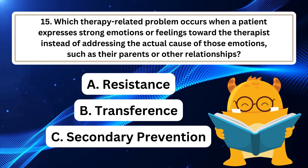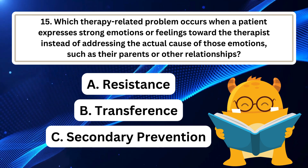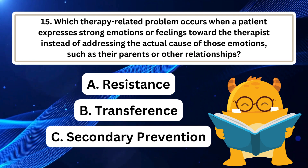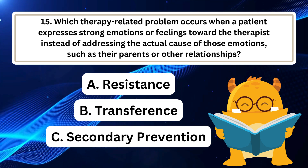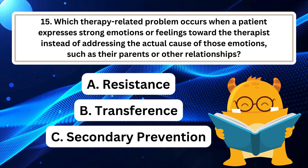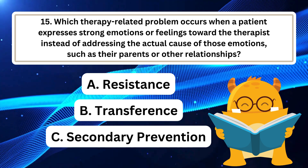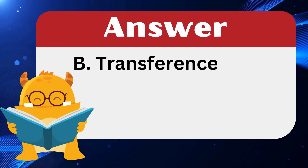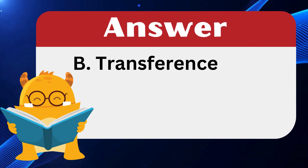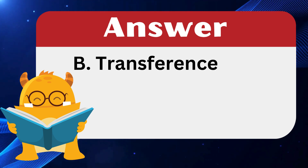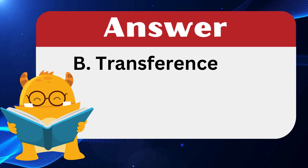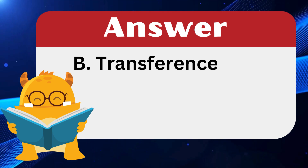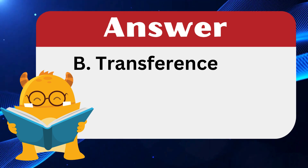Question 15: Which therapy-related problem occurs when a patient expresses strong emotions or feelings toward the therapist instead of addressing the actual cause, such as their parents or other relationships? The answer is B: Transference. Transference is a therapeutic issue where patients redirect strong feelings toward significant people in their lives — like parents or siblings — onto the therapist instead. Resistance occurs when a patient disagrees with the therapist's analysis, hindering the revealing of unconscious thoughts. Secondary prevention refers to getting treatment for those at risk.